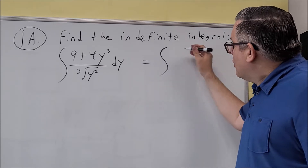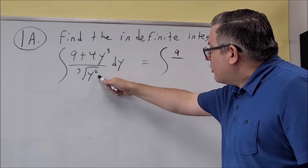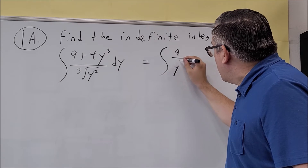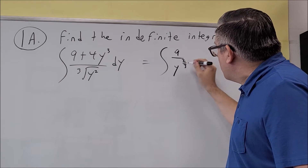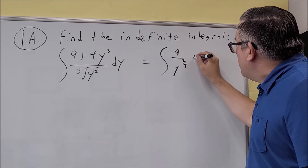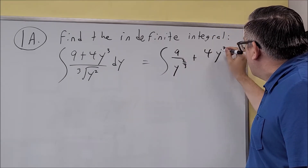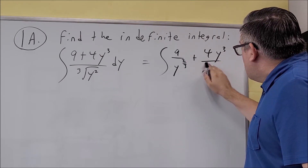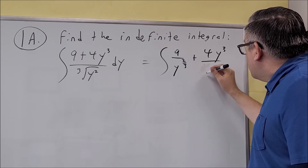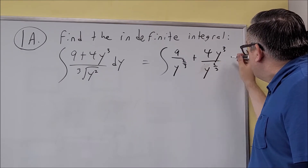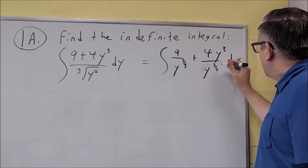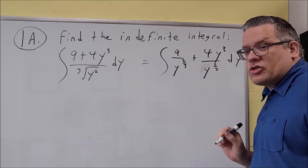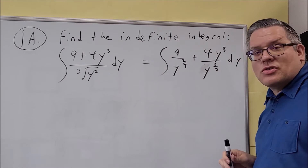So I'm going to do 9 divided by y to the 2/3 power, and then plus 4y to the 3rd over y to the 2/3. Now the next thing that we're going to do is separate this — we're going to divide each of these terms.